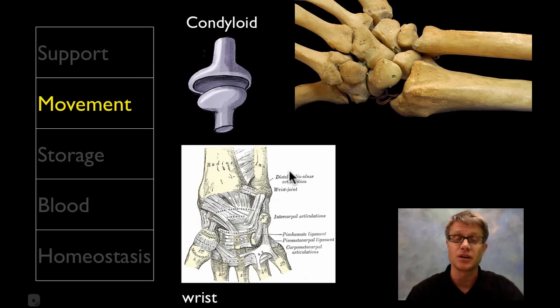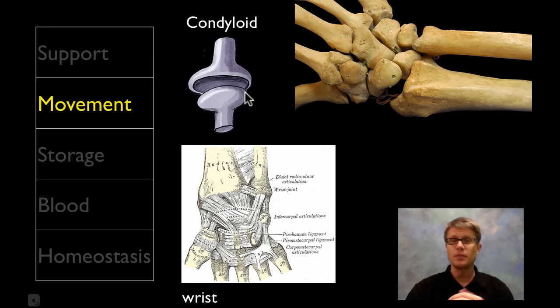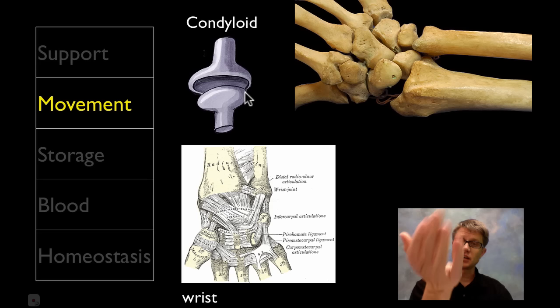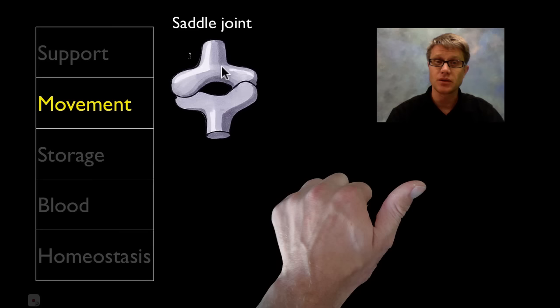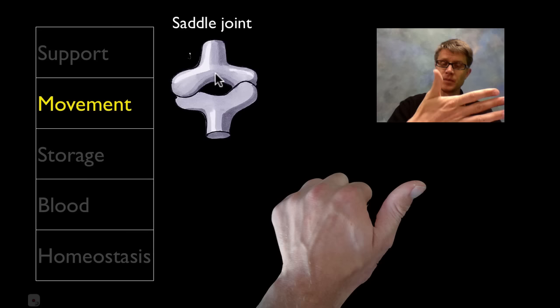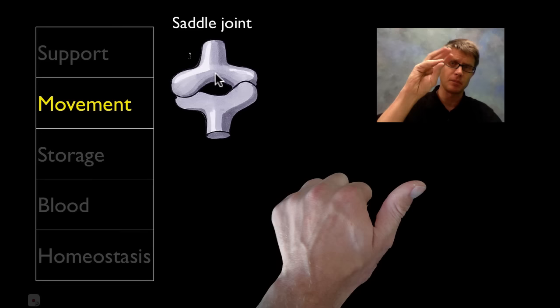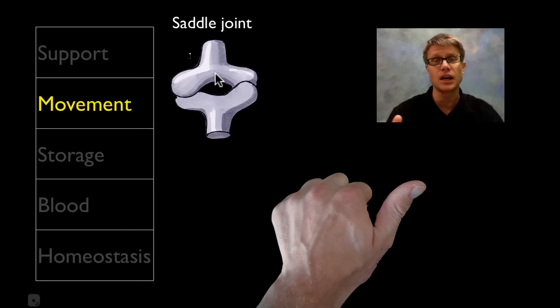Next we get to the condyloid joint. We essentially have this pedestal with a joint sitting on top of it — a perfect example would be the wrist bone. That gives me the ability to do flexion, extension, and also adduction and abduction, but I don't have all the maneuverability of a ball and socket joint. Next is the saddle joint, which looks like a saddle. A great example is the thumb, giving a huge amount of maneuverability. This gives us an opposable thumb, meaning you can touch all the other fingers with your thumb — you can thank your saddle joint for that.